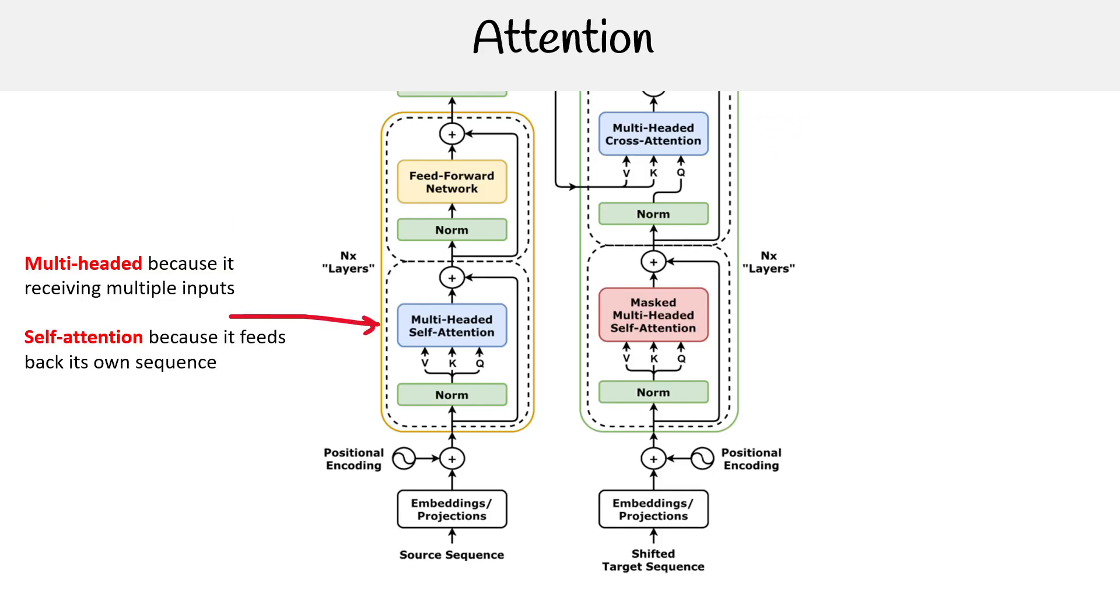Here you can see that in blue, where it says multi-headed self-attention, it's multi-headed because it's receiving multiple inputs. You see V, K, Q. I believe that the Q is for query, K is for key, and V is for value.